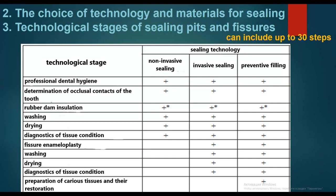For preventive sealing: professional dental hygiene, determination of occlusal contacts, rubber dam insulation, washing, drying, diagnostics of tissue condition, fissure enameloplasty, washing, drying, diagnostics of tissue condition again, then preparation of carious tissue and their restoration.